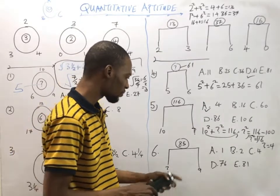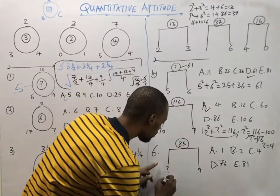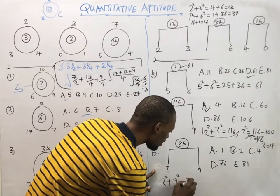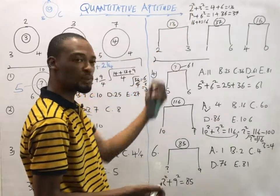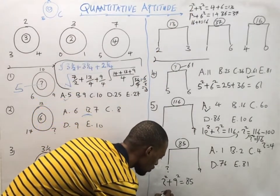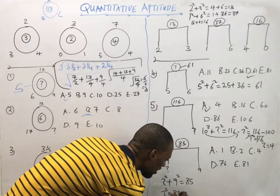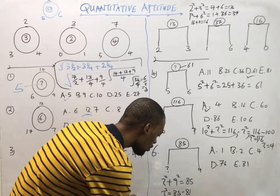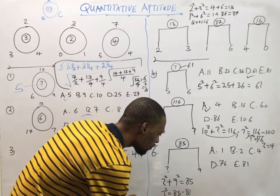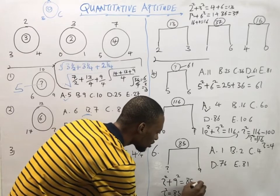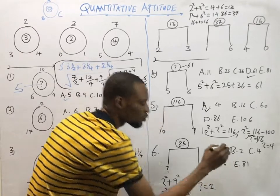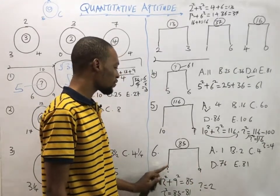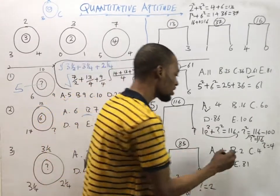For this question: the unknown squared plus 9 squared should give us 85. Therefore, the unknown squared equals 85 minus 81, which equals 4. Taking the square root of both sides, the unknown equals 2. Proof: 2 squared is 4, 9 squared is 81, and 81 plus 4 is 85.